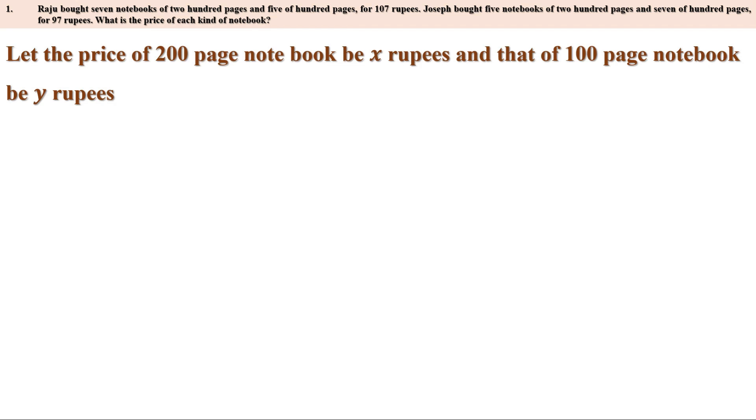Let the price of a 200-page notebook be X rupees and the price of a 100-page notebook be Y rupees. Raju bought 7 notebooks of 200 pages; the price of 7 such notebooks is 7X rupees. He also bought 5 notebooks of 100 pages at Y rupees each, so the cost is 5Y rupees. He paid 107 rupees in total, giving us the equation 7X plus 5Y equal to 107.